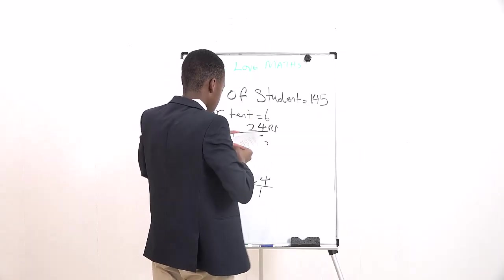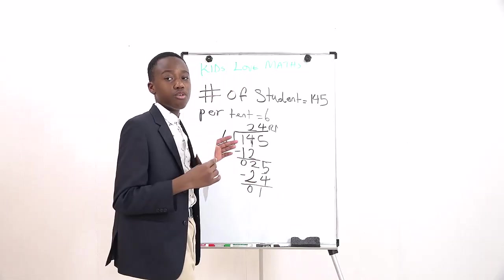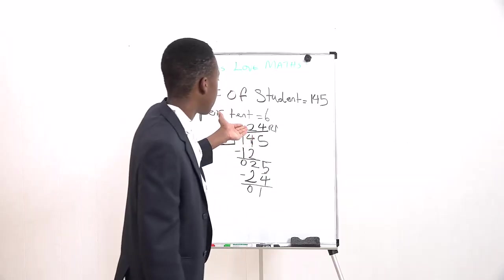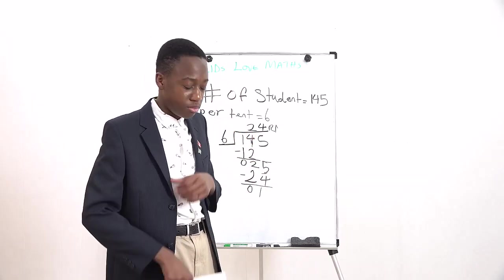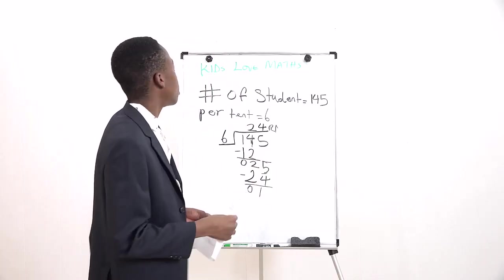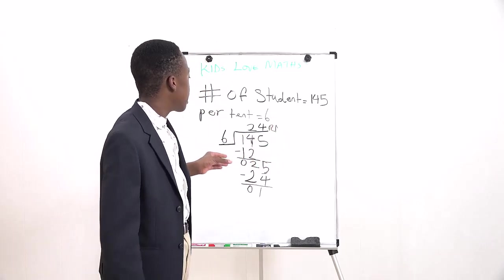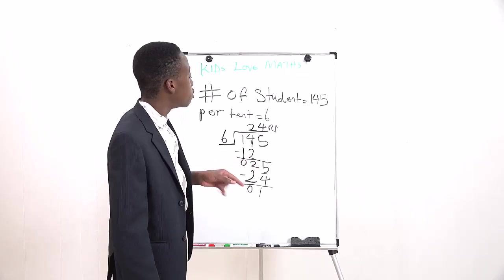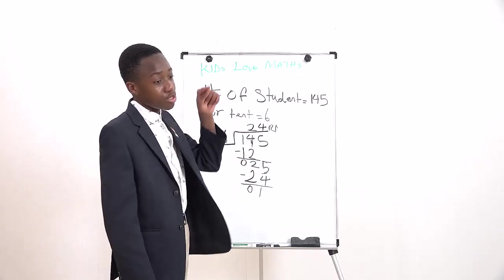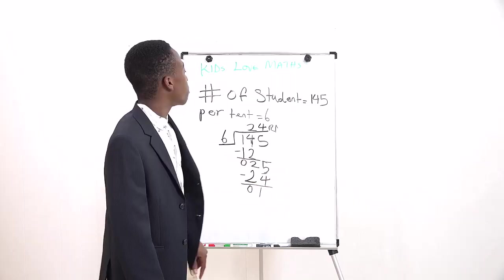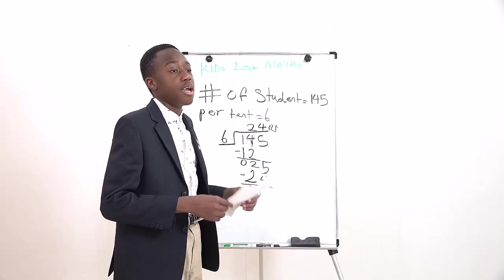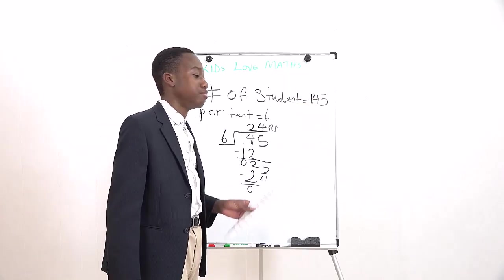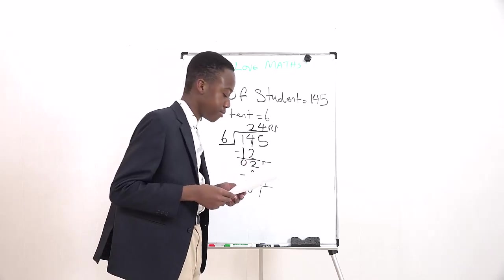So the answer is 24 students and one student will remain. Wait a second. Didn't the question say every student must have a space? We can't just let the kid be out on the streets. That would be so sad. So if they said that every student must have a space, our answer cannot be 24 remainder one. Our answer would actually be 25 tents. Since we have 24 plus one student, we would need 25 tents. We can still go on with 6 students per group, and then that student will have his own tent all to himself.